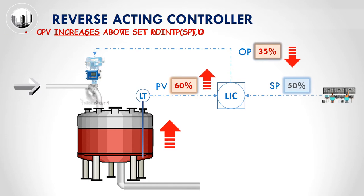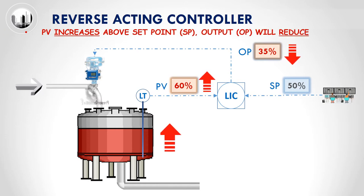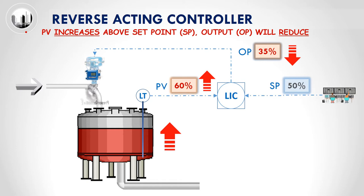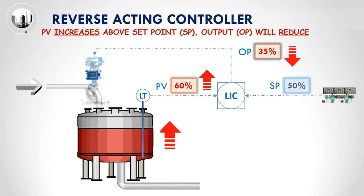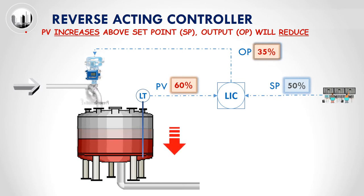Thus, for a reverse acting controller, when the current process variable or PV increases above the set point or SP, the output or OP will reduce. With the smaller opening of the control valve, the tank level will reduce back to the set point.